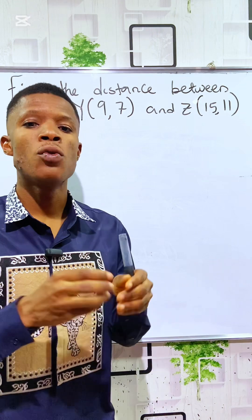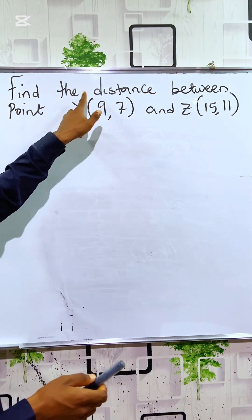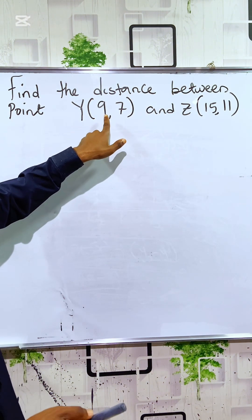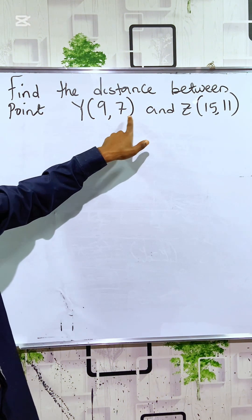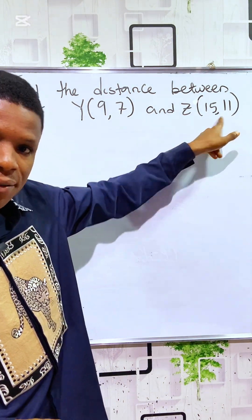we are going to learn how to find the distance between two points on a Cartesian plane. For us to do that, we will first locate the points on the plane. We are told to find the distance between point Y that has a coordinate of 9 and 7, and point Z that has a coordinate of 15 and 11.